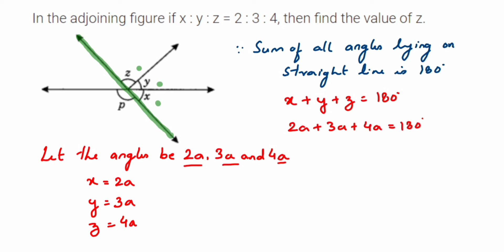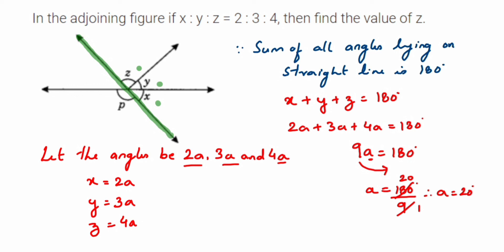Adding all the terms: 2 plus 3 plus 4 gives us 9, so 9a equals 180 degrees. Transposing, a equals 180 divided by 9, which gives a equals 20 degrees. Since they ask only for z, and z equals 4a, substituting a equals 20 gives z equals 4 times 20, which equals 80 degrees.